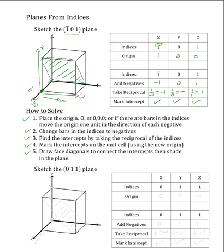For this bottom unit cell, we will be sketching the 0, 1, 1 plane. Because there are no bars in these indices, the origin will remain at 0, 0, 0, which will be right here in the back corner of the unit cell. Since there are no bars in the indices, they will remain as 0, 1, 1.